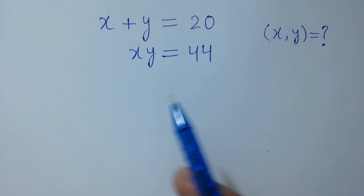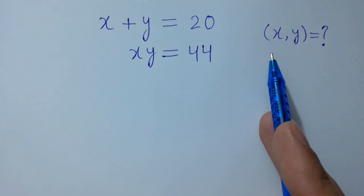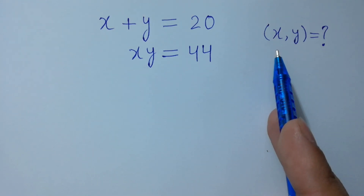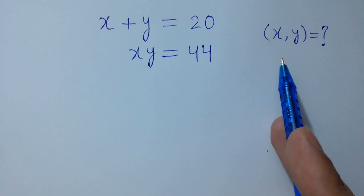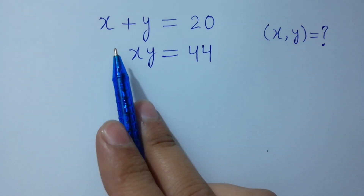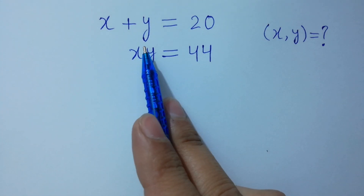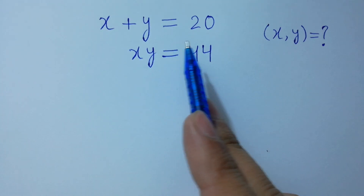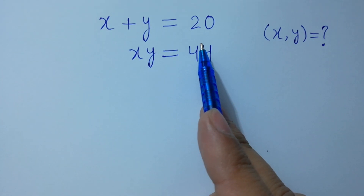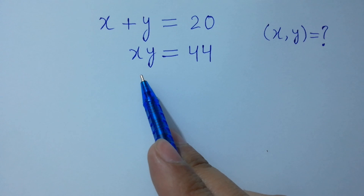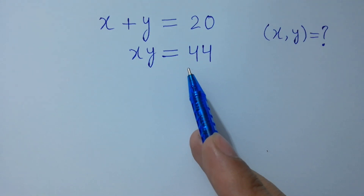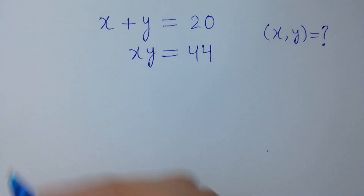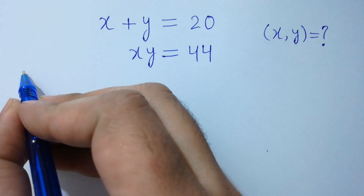Hello friends, find the value of x and y if x plus y equals 20 and x times y equals 44. Let's have a solution.